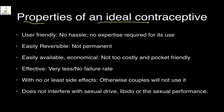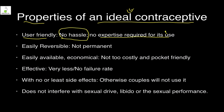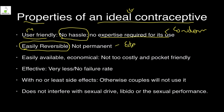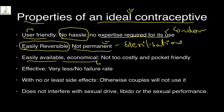An ideal contraceptive should have six key properties. First, it should be user-friendly — no hassle and no expertise required, like a condom. Second, it should be easily reversible, so sterilization does not fit this category. Third, it should be easily available and economical — hormonal contraceptives cost hundreds of rupees per month, whereas condoms are available at a very cheap price at garment stores.